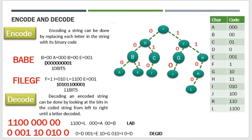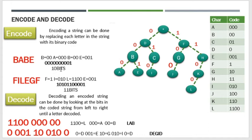Yung na-encode nating binary na yan, ang size ng message ay 10 bits. Bibilangin lang ninyo yung number ng binary digits — 1, 2, 3, 4, 5, 6, 7, 8, 9, 10 — kaya 10 bits ang size. Yung file GF naman, pinagsama na natin — 11 bits yan kasi 11 ang number of binary digits doon.